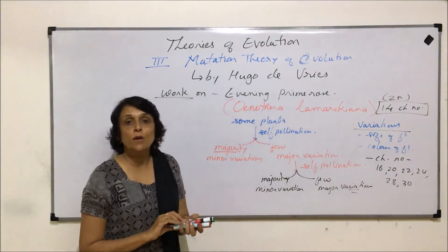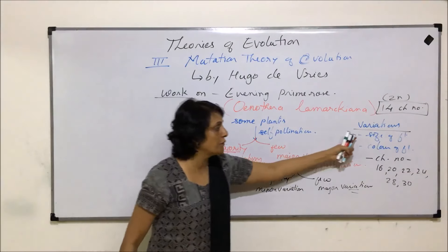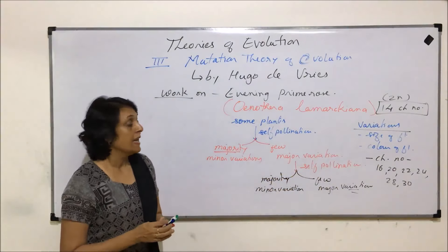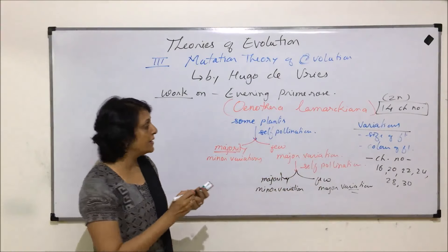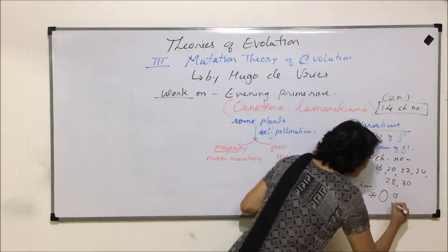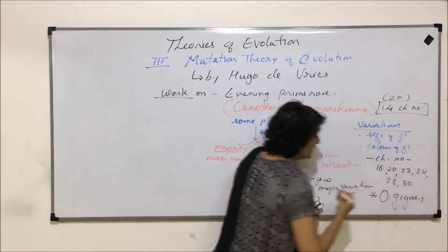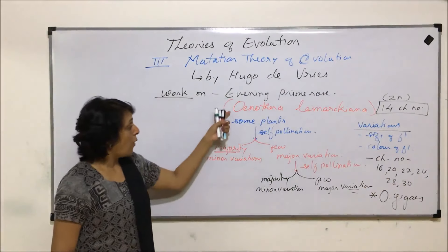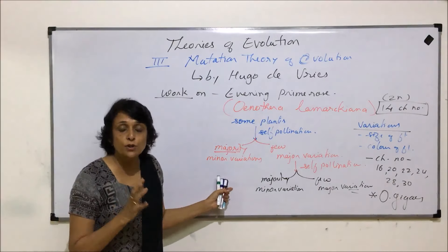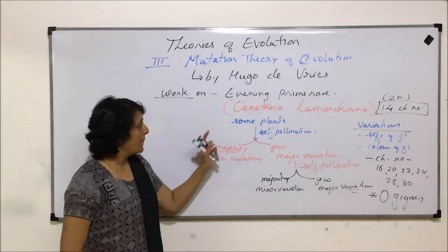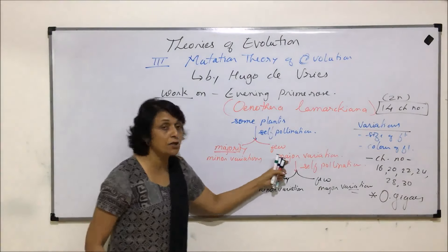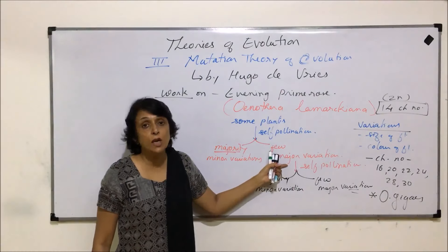He also found a very distinct plant, different in flower size, shape, and plant size, and he named it Oenothera gigas. All these changes were sudden because they were observed in the next generation — the parent generation did not show that change, and only very few organisms in the next generation showed it.